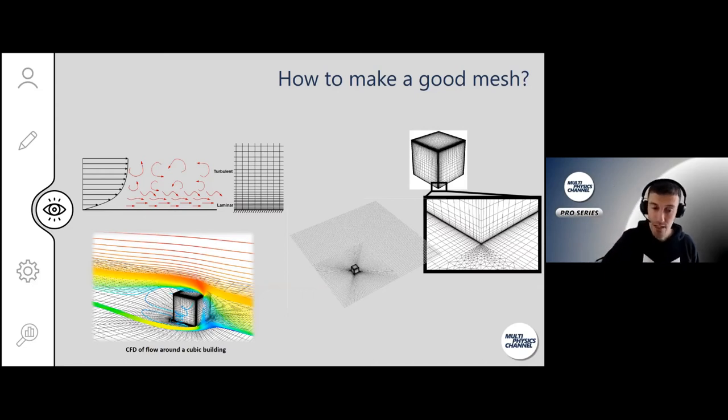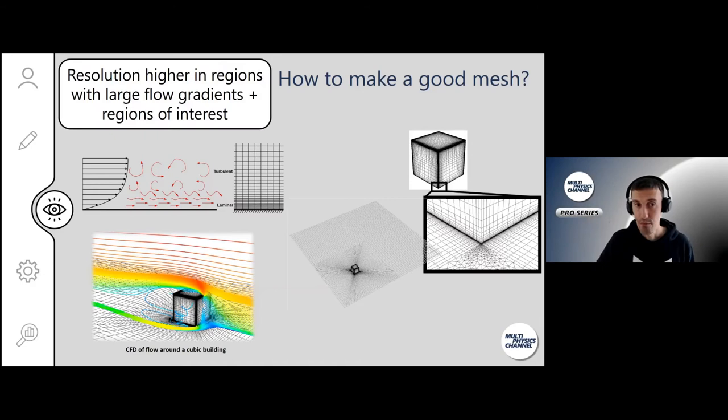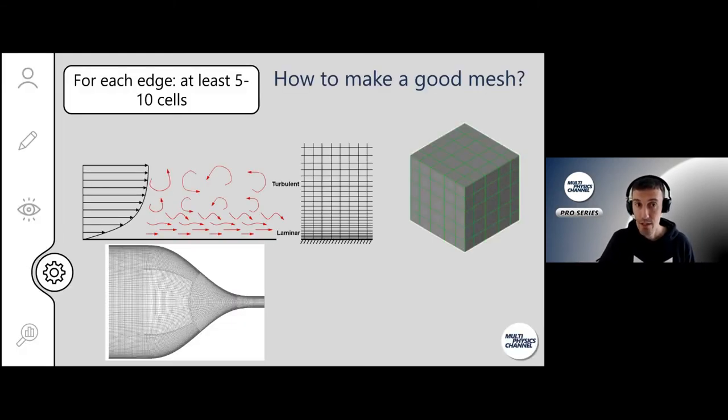In the rest of the domain you can compromise a little bit because you're not so interested in the solution there. You can go a little bit coarser. So high resolution when you have high gradients, for example with flow or heat transport, and in the region of interest. Very important.